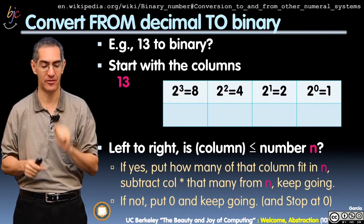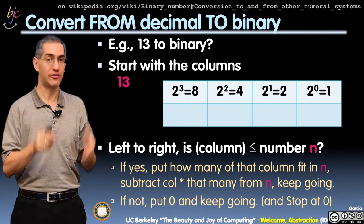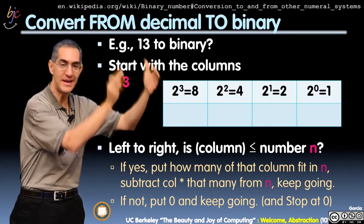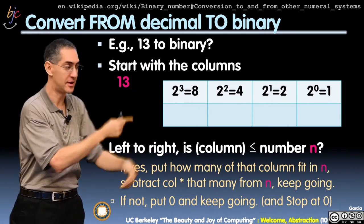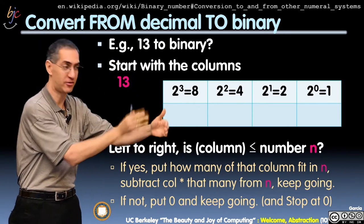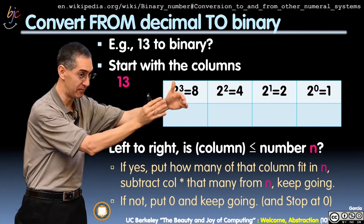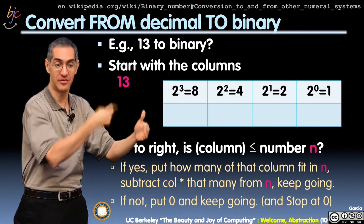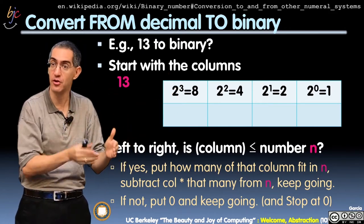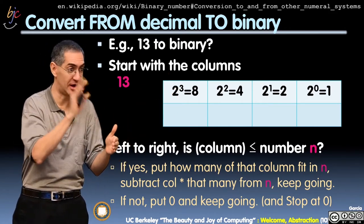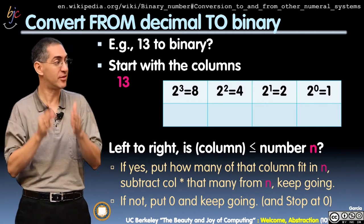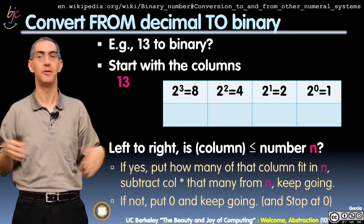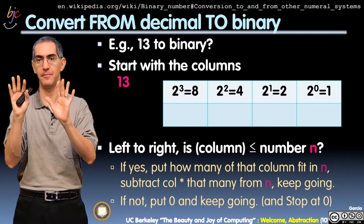Let's see if it works out this way. So you start with all the columns. Base to the 0 — here it's 2 to the 0, which is 1, the 1's column. Then base to the 1, which is the 2's column. Base to the 2, the 4's column. Base to the 3 is the 8's column. And you keep going for how many digits you have.